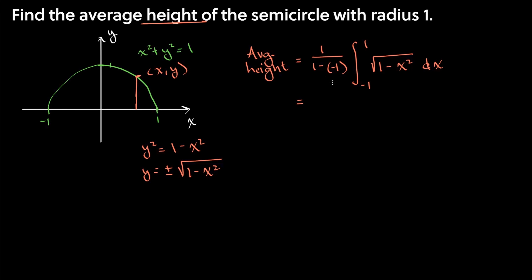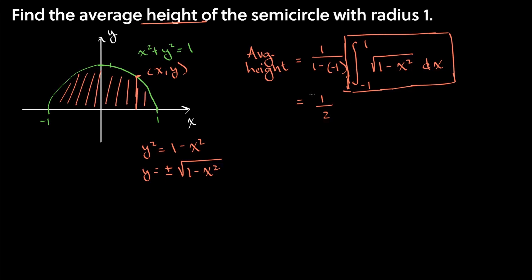So we're going to have 1 over 2 times this definite integral. If you know how to do trigonometric substitution, be my guest to try to compute this, but you really don't need it. What is this really saying? Well, this is the area of our semicircle. The area of a circle is π r squared, and radius is 1, so the area of the full circle is π, and we want half of that. So this is going to be π over 2.